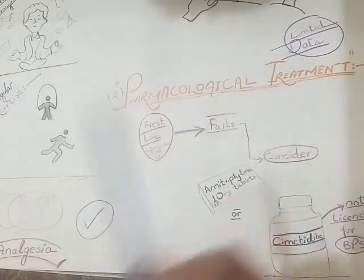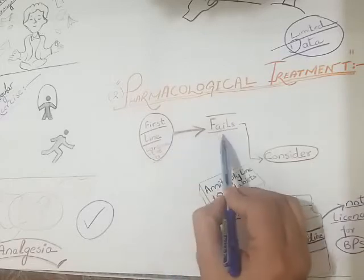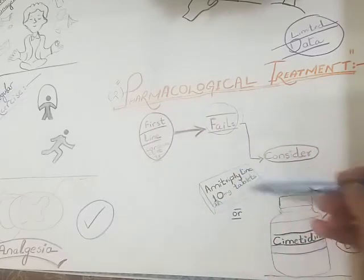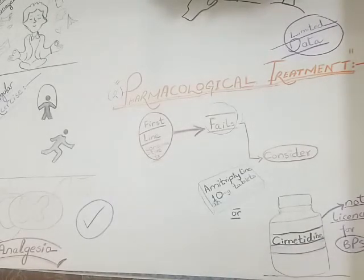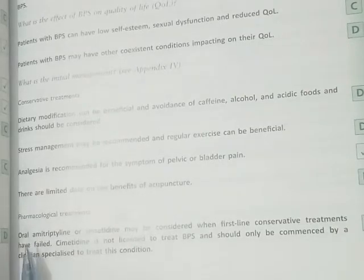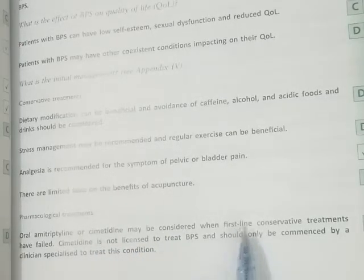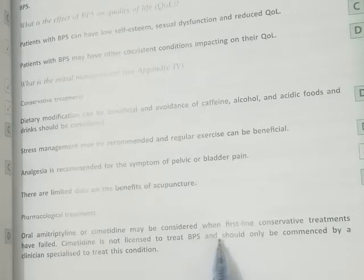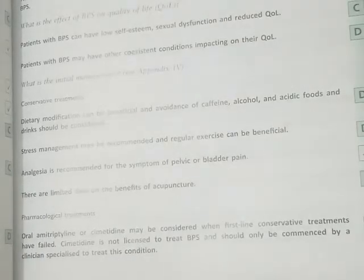When first-line conservative treatments have failed, pharmacological treatment should be considered. Amitriptyline or cimetidine may be considered. Cimetidine is not licensed to treat bladder pain syndrome and should only be commenced by a clinician specialized in treating this condition.